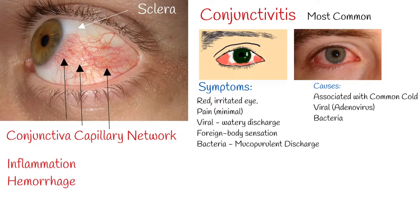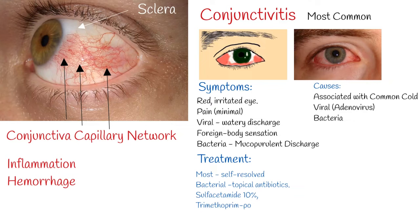Viral conjunctivitis is self-resolved. Bacterial conjunctivitis mild cases can be treated with broad-spectrum topical antibiotics such as sulfacetamide 10%, or a trimethoprim-polymyxin combination. Prevention is partly by hand-washing.